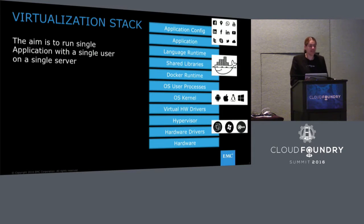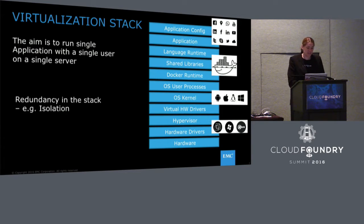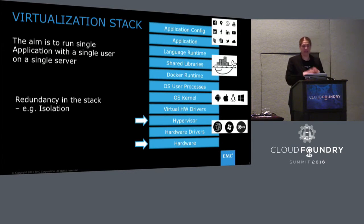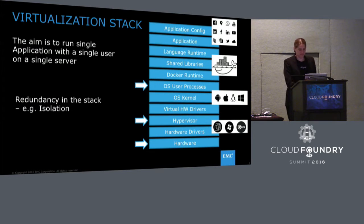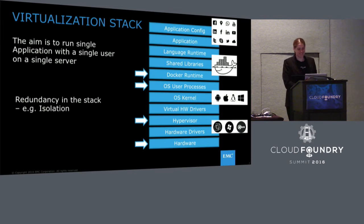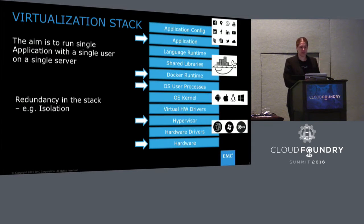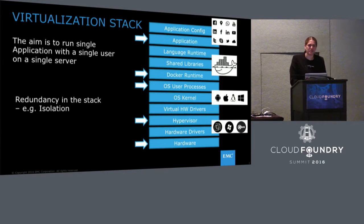If you look at this layer there is a lot of redundancy. Isolation is a great example. You have physical isolation on the hardware, then the hypervisor isolates the VM, OS user processes separate the processes, Docker runtime basically does the same thing, and then your application separates users. So there's a lot of redundancy and inefficiency.